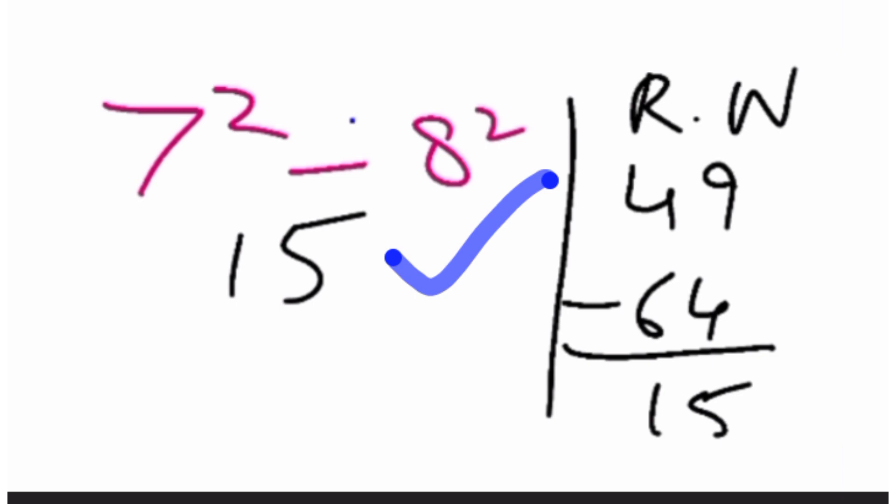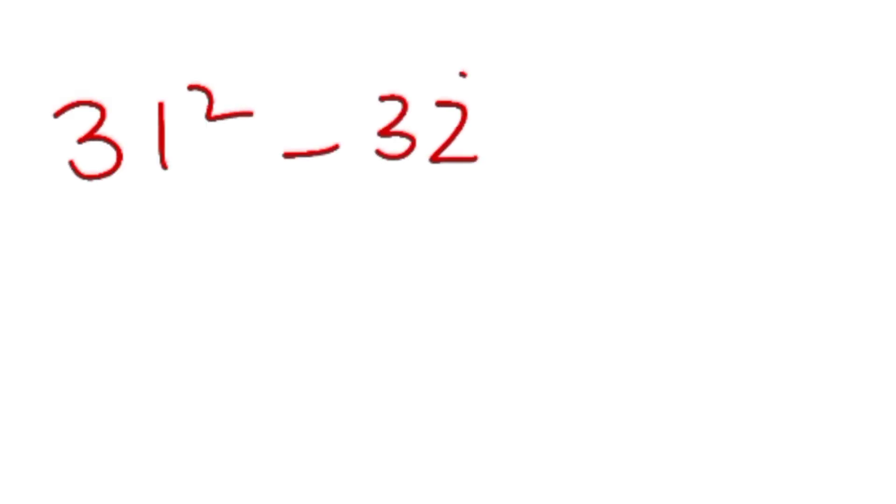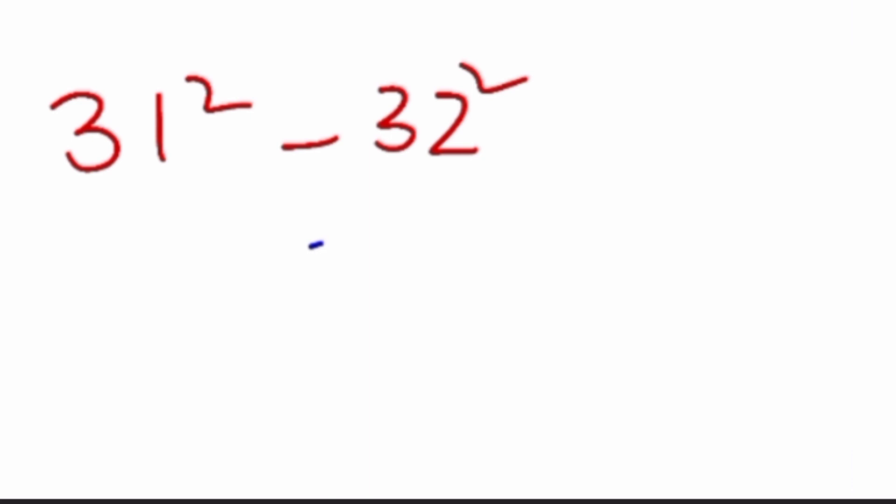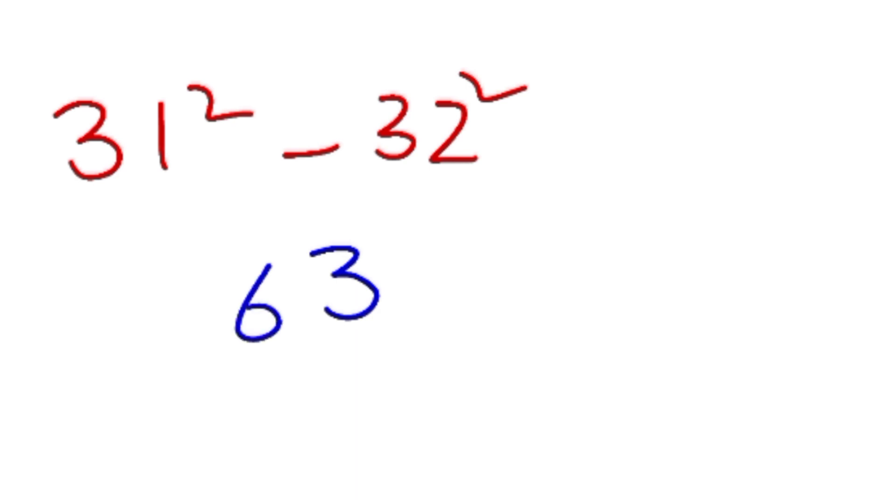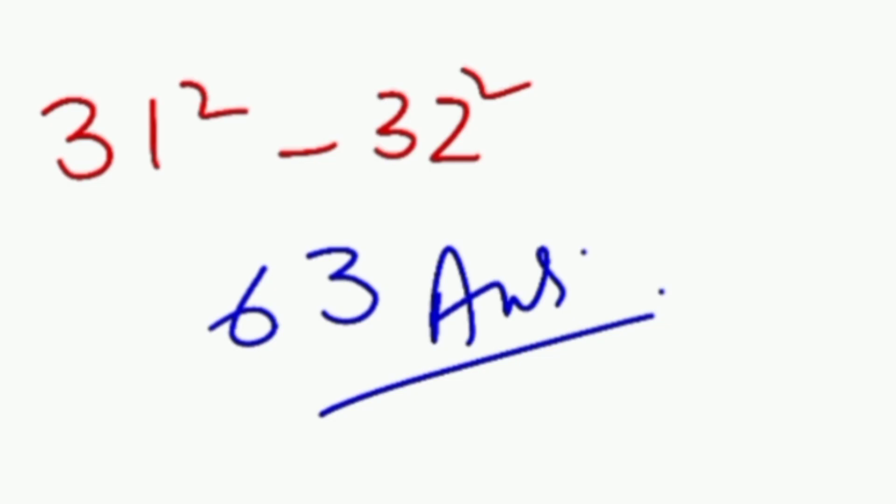Now did you notice how quickly we solve this question with this trick? Now try to solve another question, for instance, 31 square minus 32 square. So dear guys, for solving this question, when we add 31 to 32 we get the answer 63. This is the answer of 31 square minus 32 square.